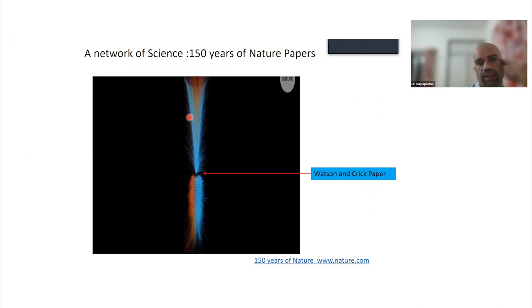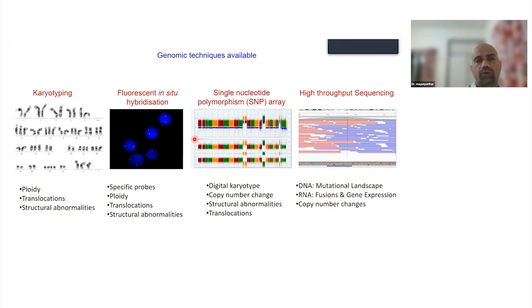Once the structure of DNA was identified, what you see here is an image from Science where about 150 years of Nature papers have been displayed. Each dot is a published paper and how these papers connect with each other. Before Watson and Crick's paper on DNA structure, there were very few papers on genomics. Once that was discovered, there was a huge change in understanding the DNA, understanding biology, and developing technologies. You can see there's a fountain of papers that came on genomics.